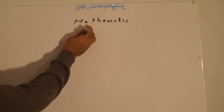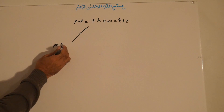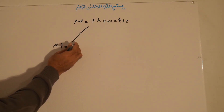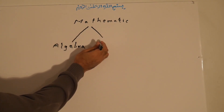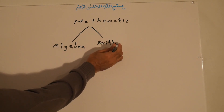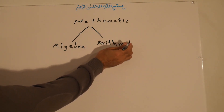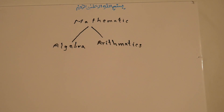Mathematics has two main branches. The first one is algebra, and the second one is arithmetic. We start with arithmetic first, because arithmetic is also the base for algebra and all other mathematics.